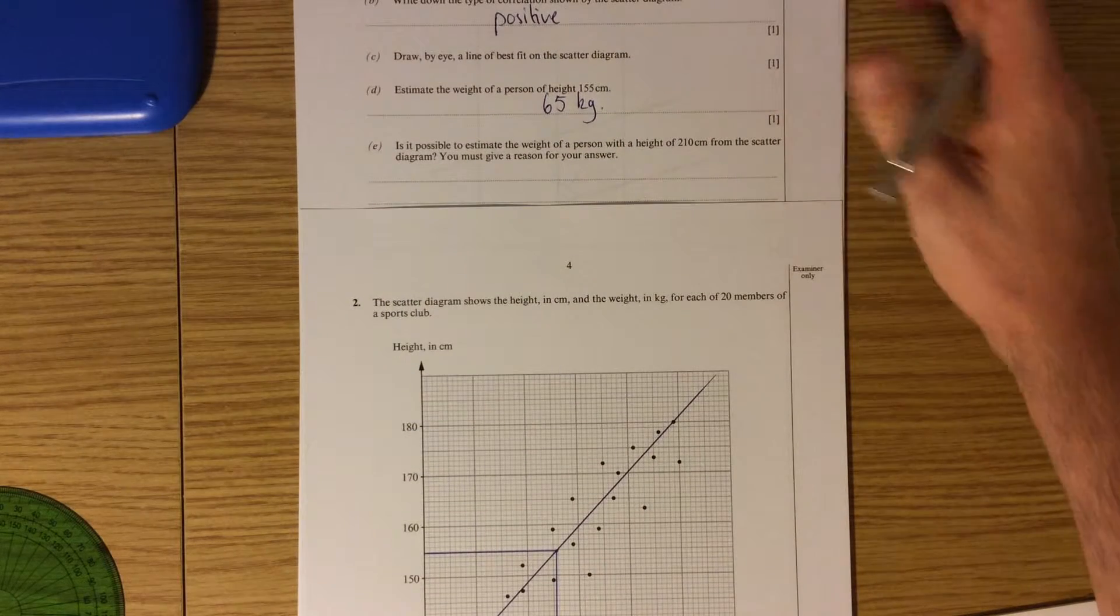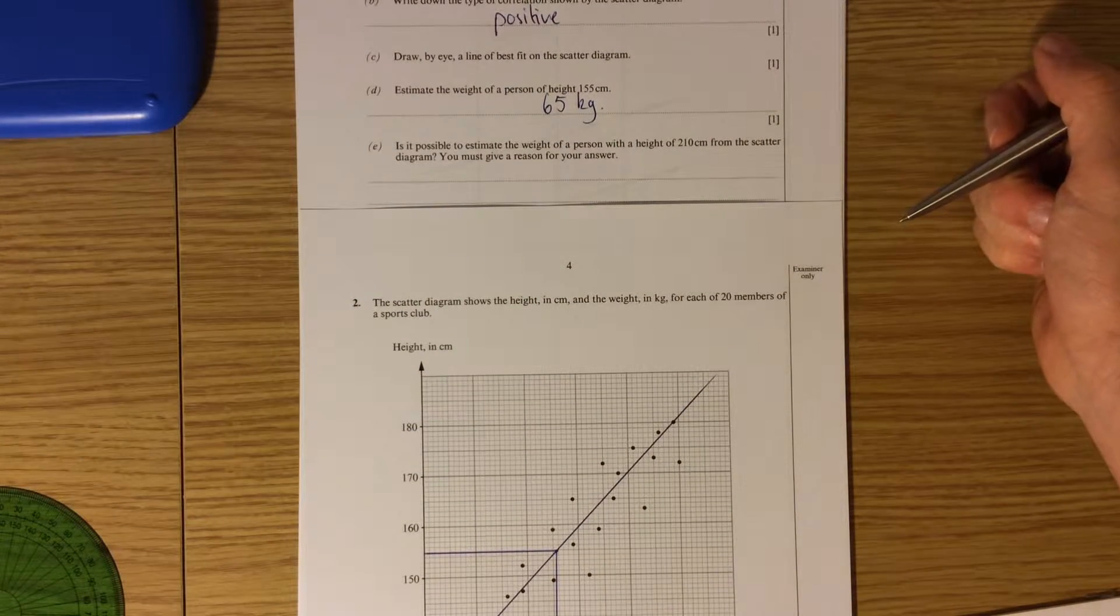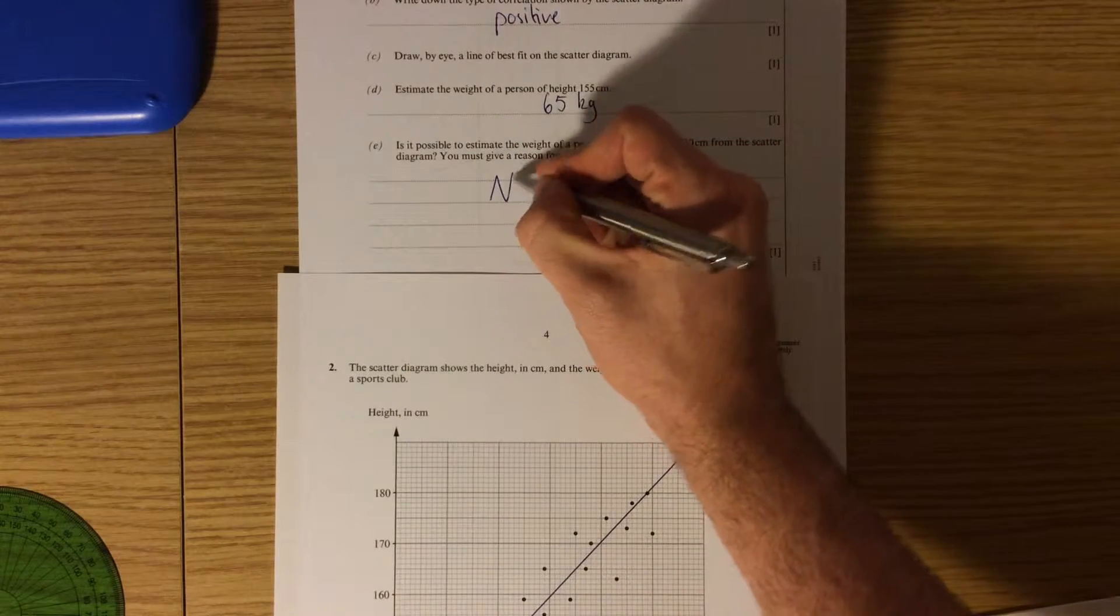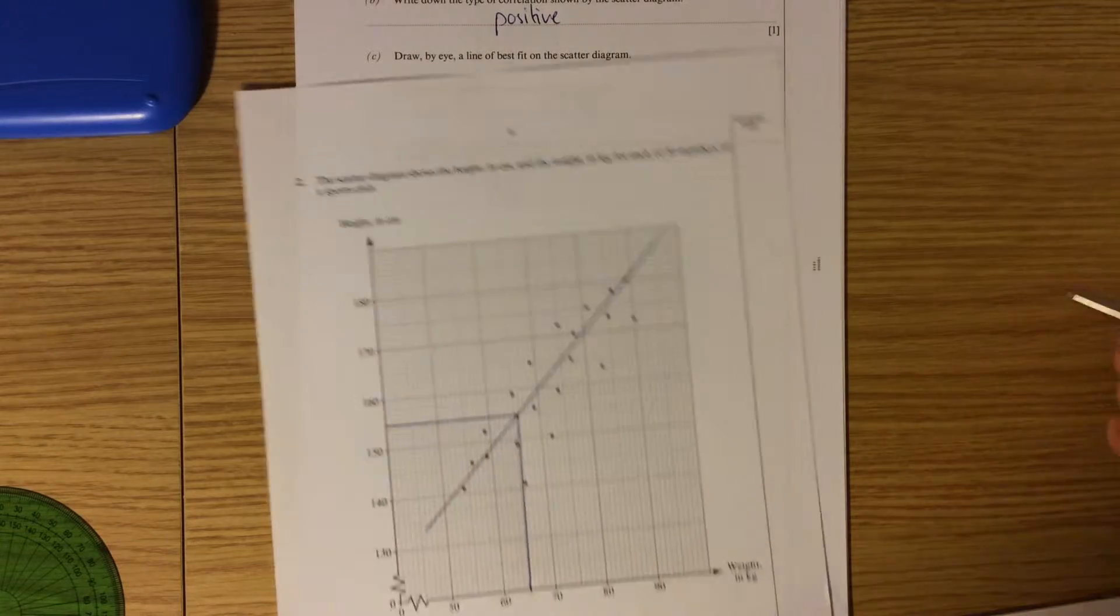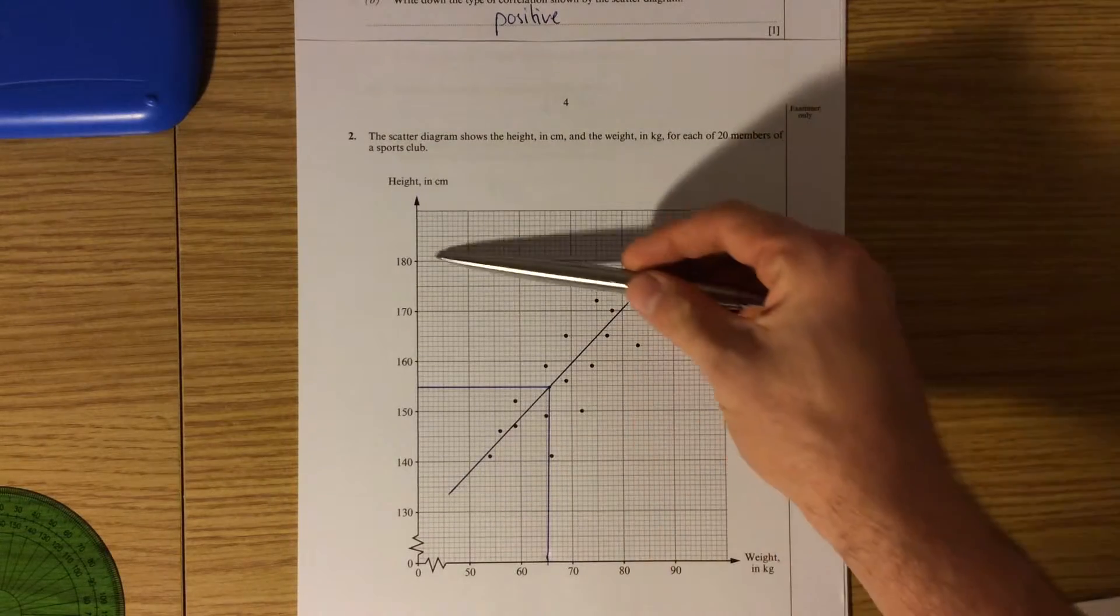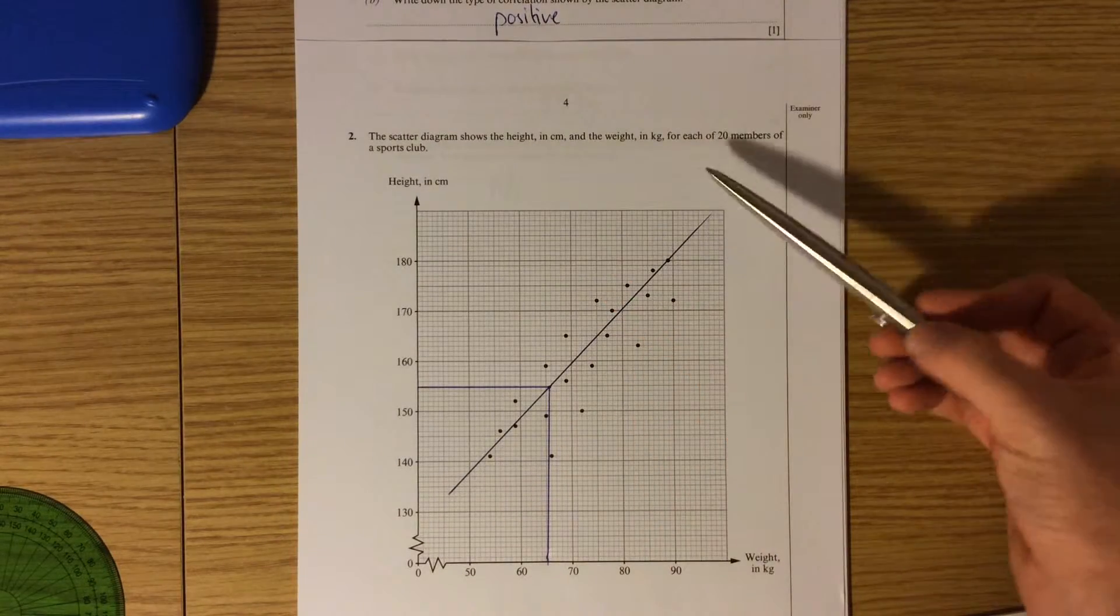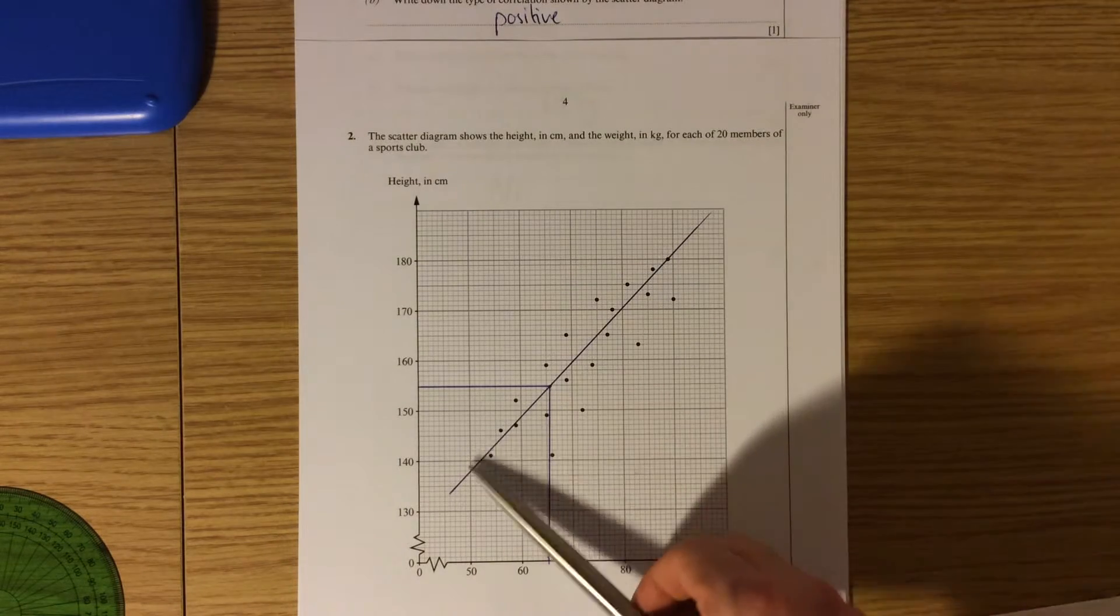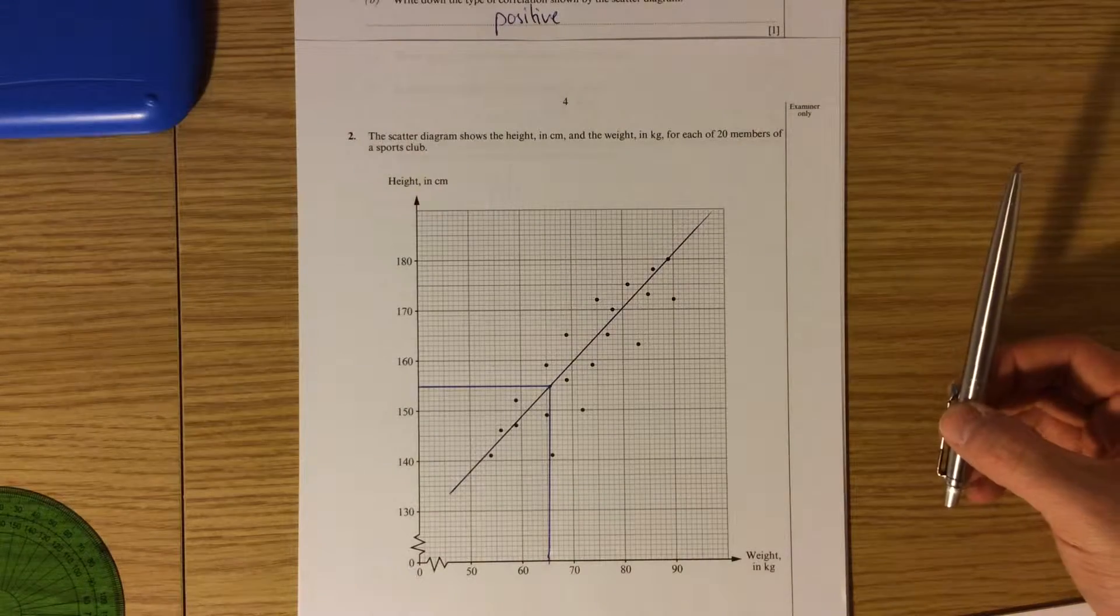Is it possible to estimate the weight of a person with a height of 210 from the scatter diagram? You must give a reason for your answer. Well the answer is no, and the reason why is because the data we have only goes up to 180. There is no information about what would happen at 210. We can't assume that this correlation continues further than the data we have.